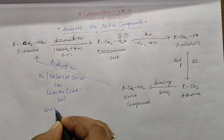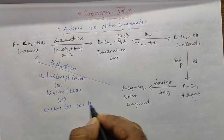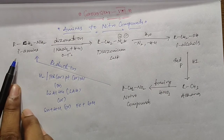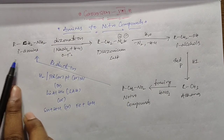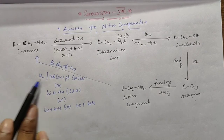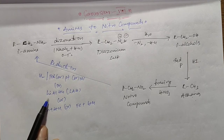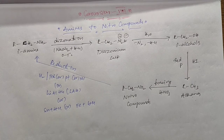A third reduction method is using tin and hydrogen chloride, or iron and HCl mixture. So to summarize the three reduction methods: first, hydrogenation with palladium, platinum, or nickel; second, reduction with lithium aluminum hydride; third, tin and HCl or iron and HCl mixture.